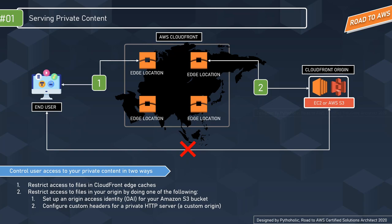Next, we can configure custom headers for a private HTTP server — a custom origin. Remember, if you want CloudFront to get your files from a custom origin, the files must be publicly accessible. You might think: if it's publicly accessible, how do you restrict it? We update our CloudFront distribution to forward a new header to the custom origin, then update our application to accept that header as confirmation that the request is coming from CloudFront. When viewer requests no longer include the old header, we update the application to stop accepting the old header as confirmation.